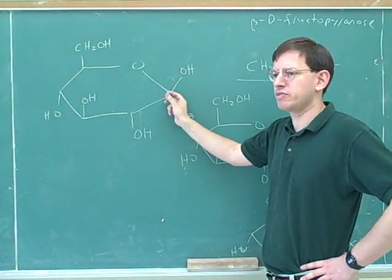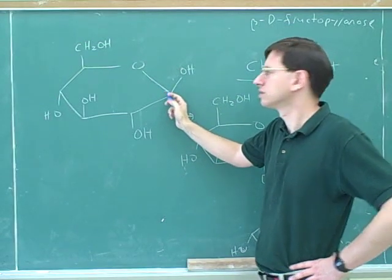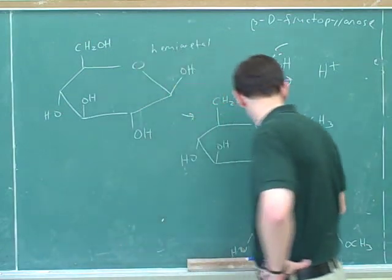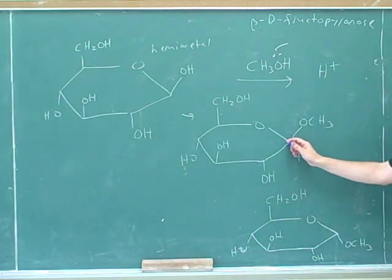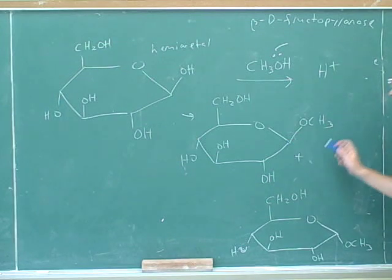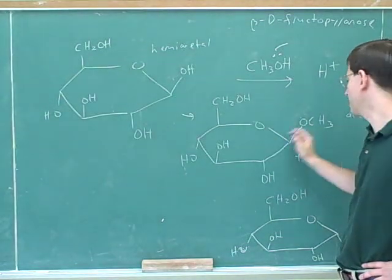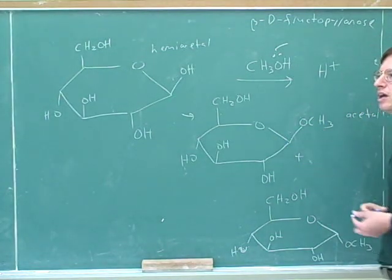What type of functional group did we say we started with here? A hemiacetal. Right. And what type of functional group do we have here now? An acetal. A full acetal. Now it's full because now there's two OR groups. The OR group in the ring and this new OR group that came in.